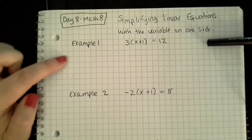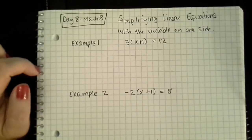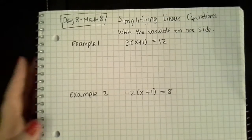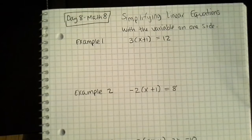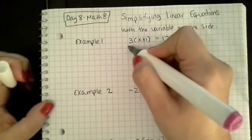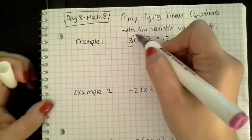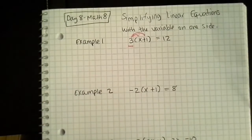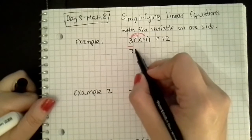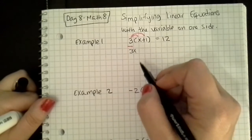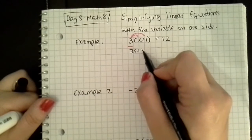notice we have 3 times parentheses x plus 1, close parentheses equals 12. I'm going to go ahead and use the distributive property because I have parentheses. Notice that your multiplier is a 3, so we're going to multiply that times each term inside the parentheses. That gives me a positive 3x, because 3 times x is a positive 3x. 3 times a positive 1 becomes a positive 3.